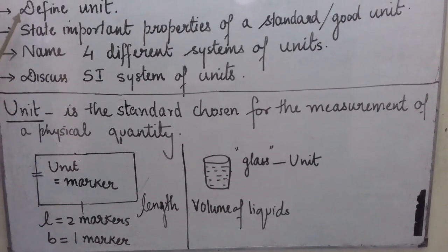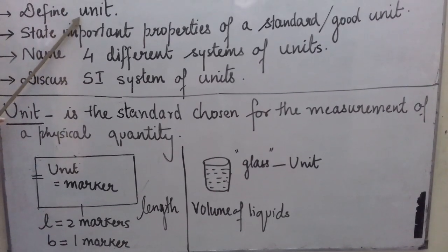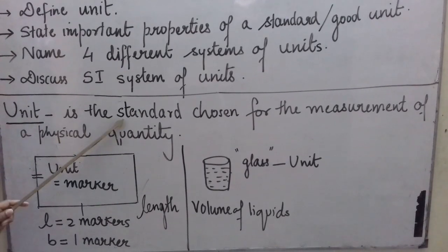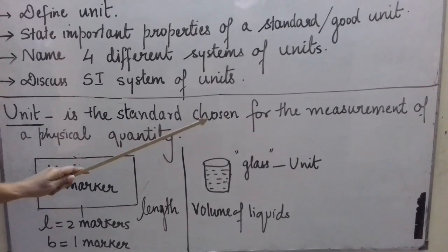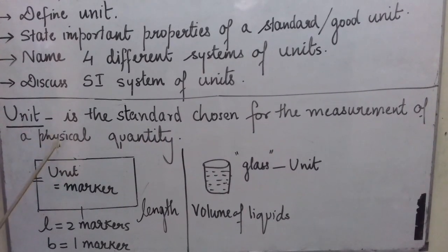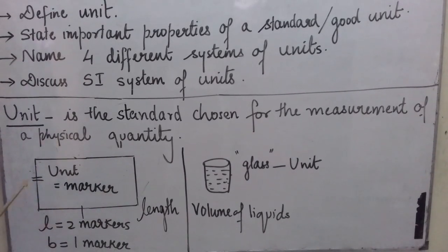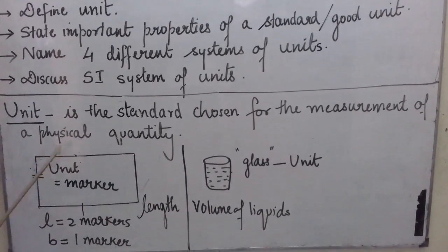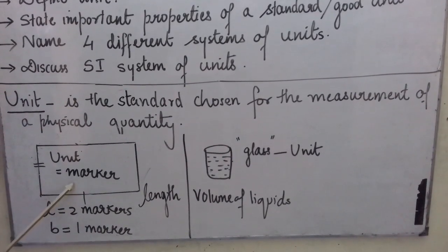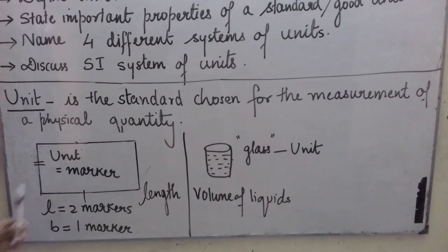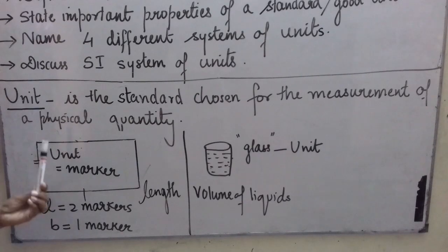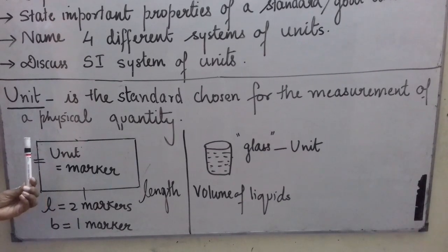Let us see our first outcome: define unit. The definition of unit is — the unit of any physical quantity is the standard chosen for the measurement of a physical quantity. Let us try to understand this definition properly with the help of this figure. If I ask you to find the length and breadth of this rectangular figure, let us say you don't have a scale but you have this marker, then obviously you will use this marker as your standard for the measurement of these different lengths.